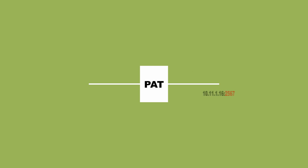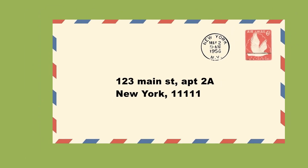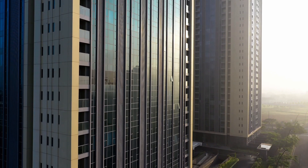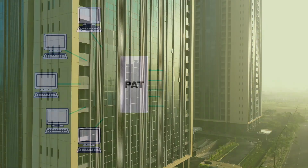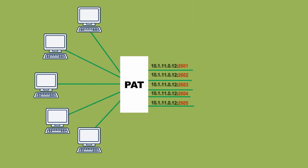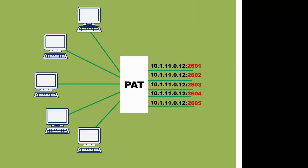When there is a reply, the port number will be used to determine where on the local network to send it. Think in terms of an apartment number on a building address — with just the addition of that number, multiple residents can use the same building address to send and receive mail. And so, with PAT, multiple local devices can use the same public address to connect to the internet.